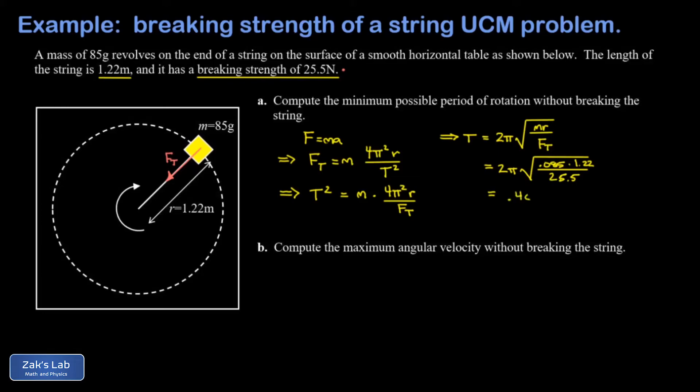In part b we're asked to find the maximum angular velocity corresponding to that period. There's a couple ways of going about this. By far the simplest way would be to just remember the relationship between angular velocity and period, so the angular velocity that's in radians per second is 2π over the period. To three sig figs this comes out to 15.7 radians per second and that's a fine solution.